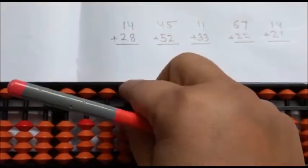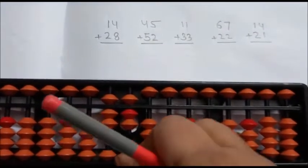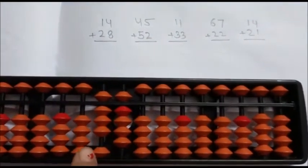Fourth question: 67. 22: 20 is direct. 2 is direct. Answer is 89.